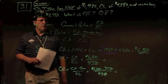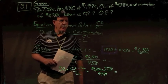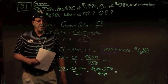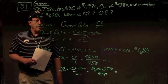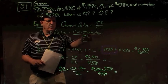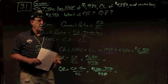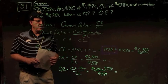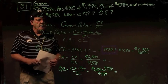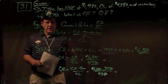The current ratio equation is current assets divided by current liabilities off the balance sheet. The quick ratio is current assets minus inventory over current liabilities. We want to see how liquid this company is — inventory is not very liquid. We are going to need to find current assets.